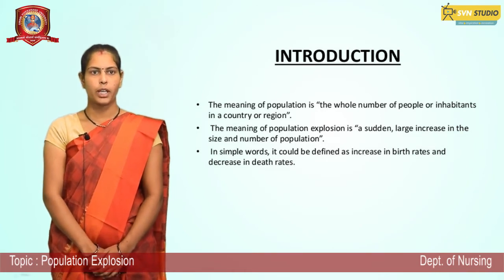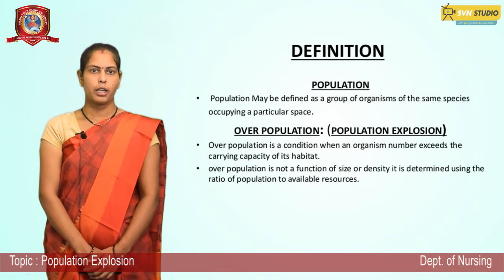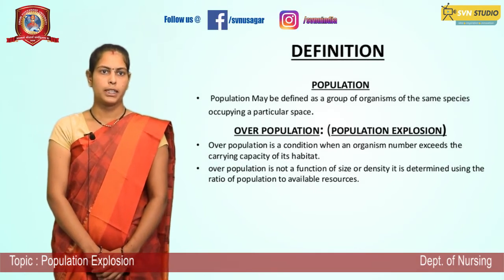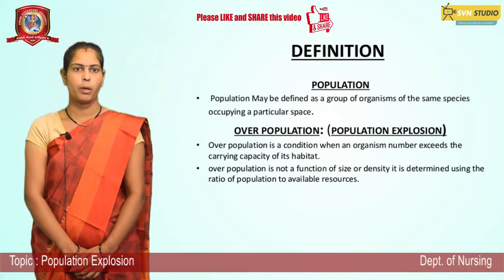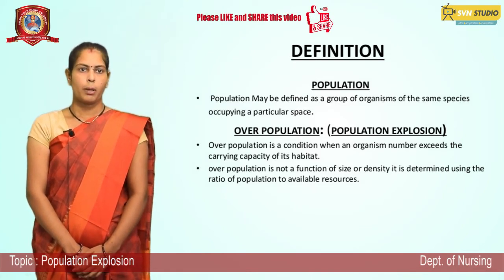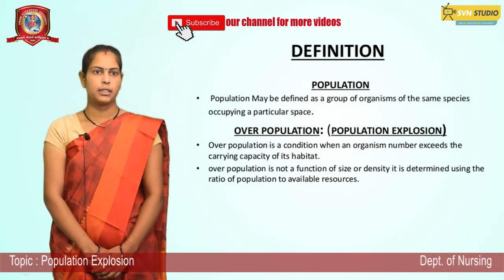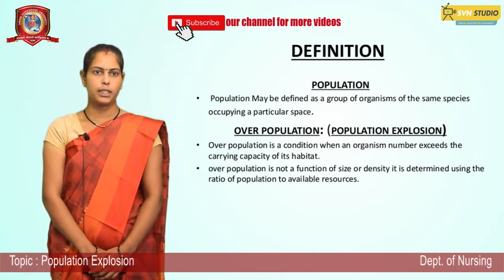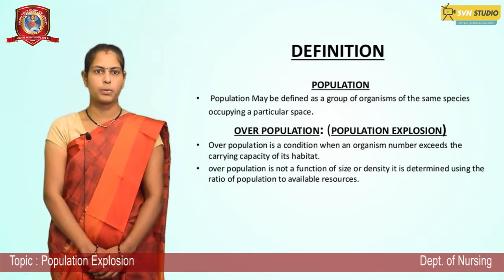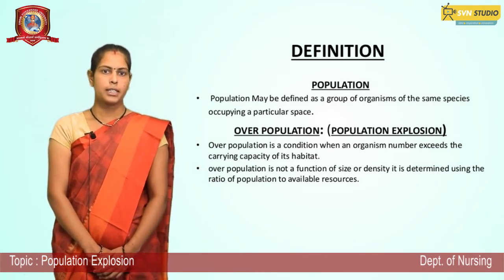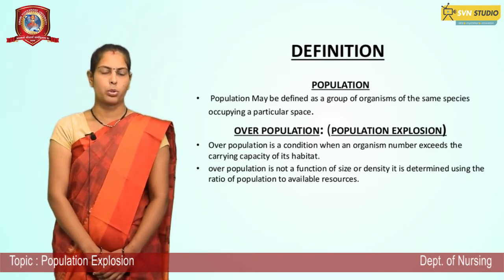Population may be defined as a group of organisms of the same species occupying a particular space. Overpopulation is a condition when an organism's number exceeds the carrying capacity of its habitat. Overpopulation is not a function of size or density; it is determined using the ratio of population to available resources.